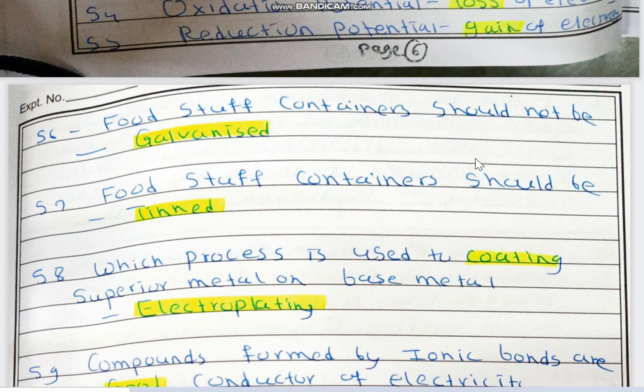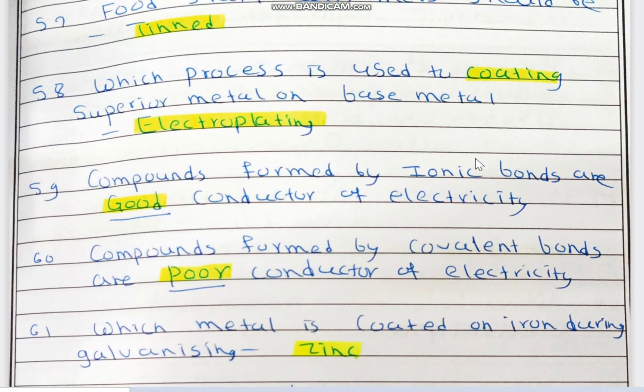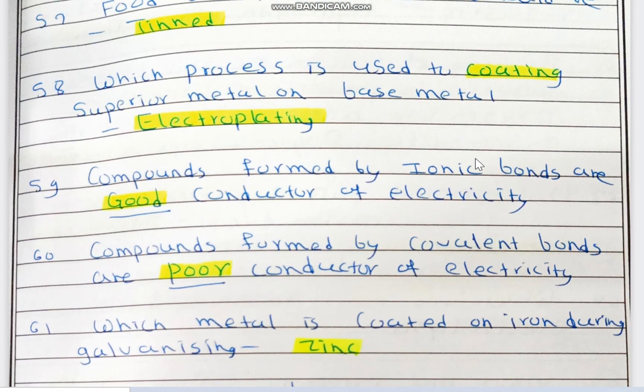Foodstuff containers should not be galvanized, because zinc present in the galvanized coating poisons the food content. Therefore, it should not be galvanized. Foodstuff containers should be tinned.